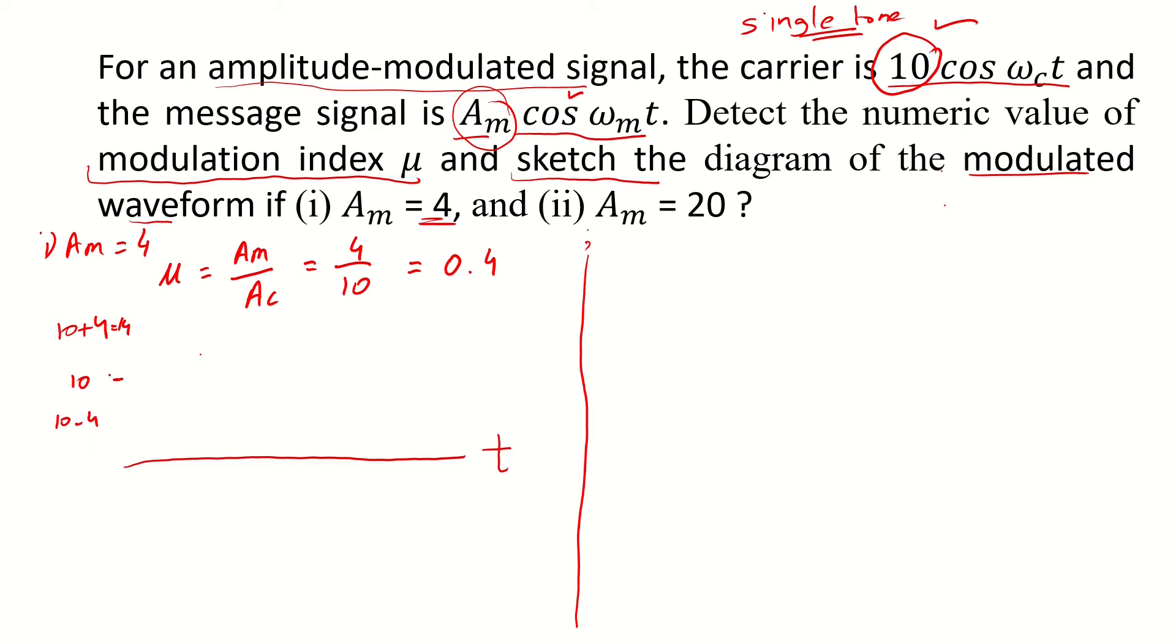That would be equivalent to simply 6. So the upper envelope we would have an oscillation starting from 14 and then it would go down until 6.